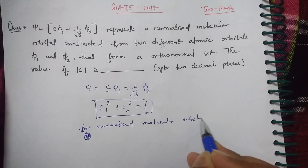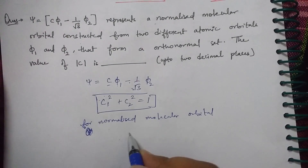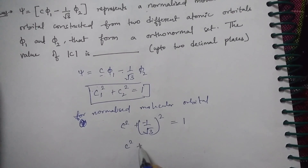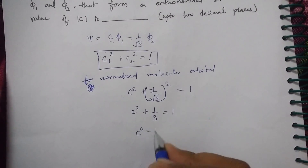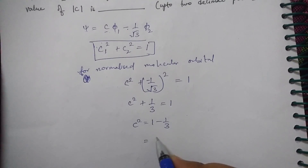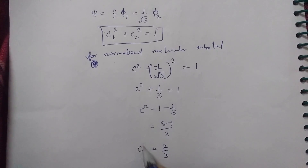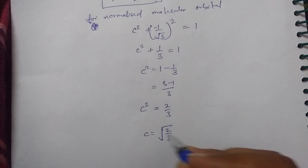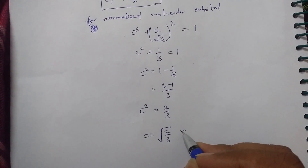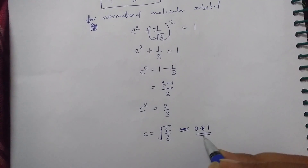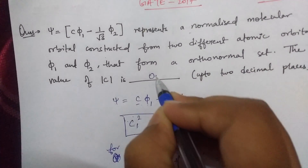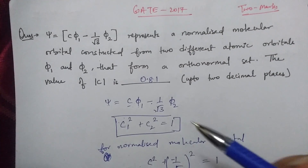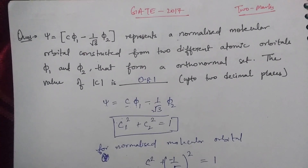For the normalized molecular orbital, c² + 1/3 = 1, so c² = 1 − 1/3 = 2/3. Therefore c = √(2/3). Using the calculator provided in the Gate exam, this value equals approximately 0.81. The correct answer is 0.81. These were the three questions from quantum chemistry — hope you liked the video. Please like and subscribe.